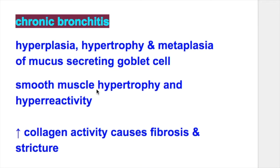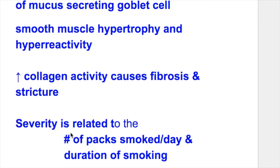In chronic bronchitis, hyperplasia, hypertrophy and metaplasia of mucus-secreting goblet cells, smooth muscle hypertrophy and hyperactivity, and increased collagen activity cause fibrosis and stricture.